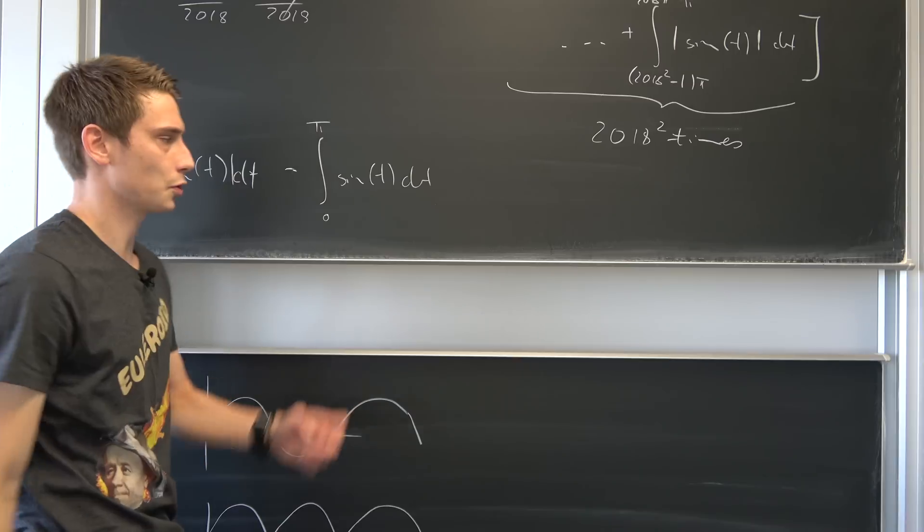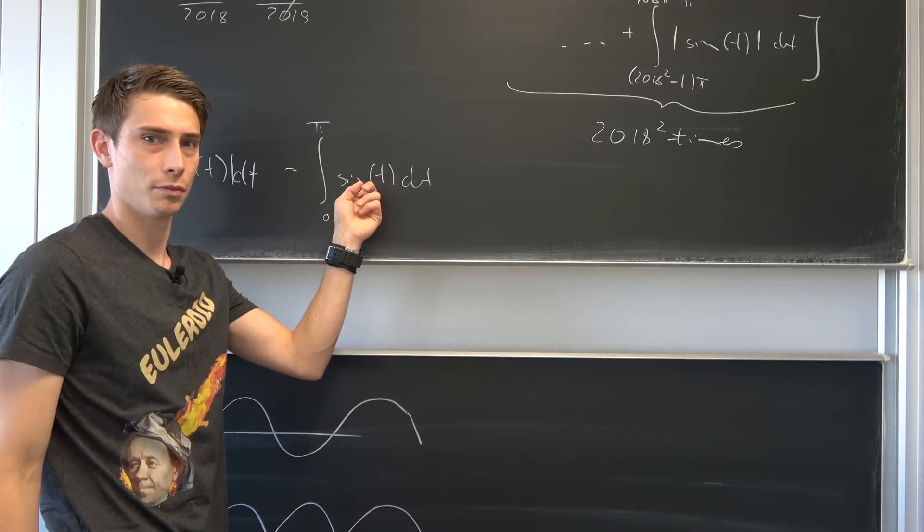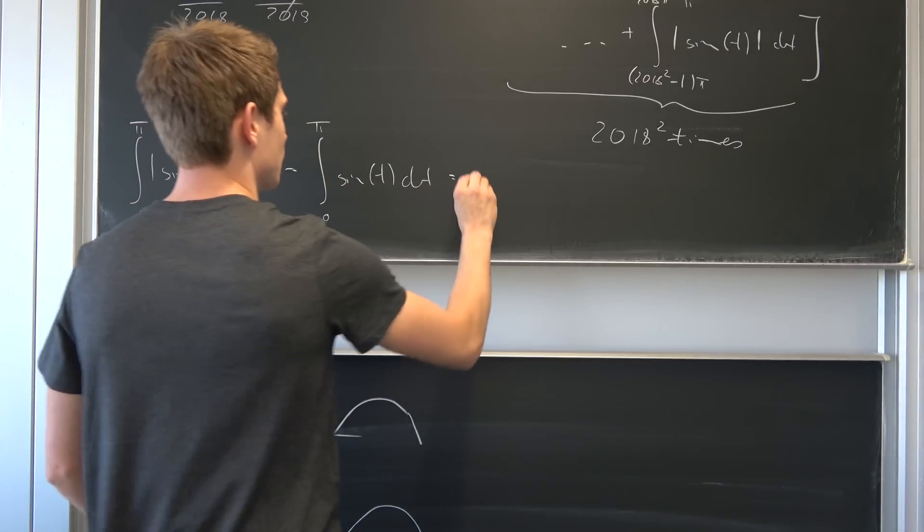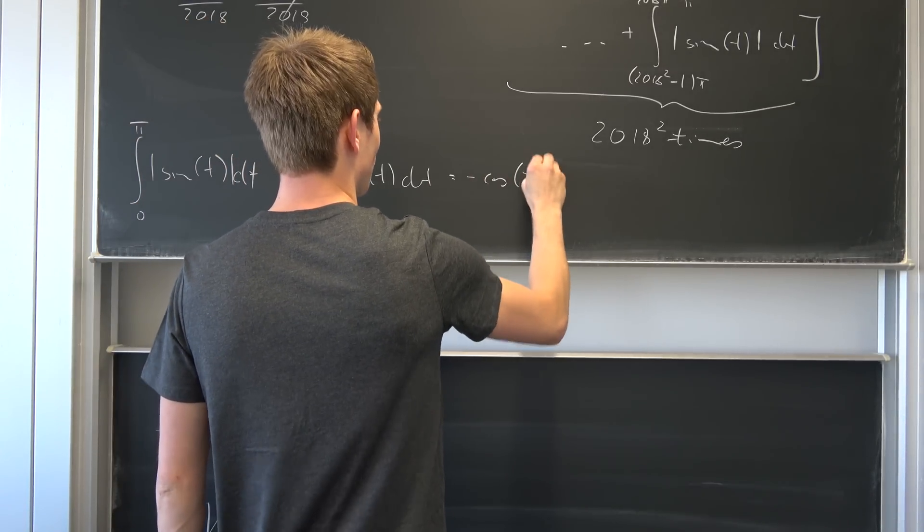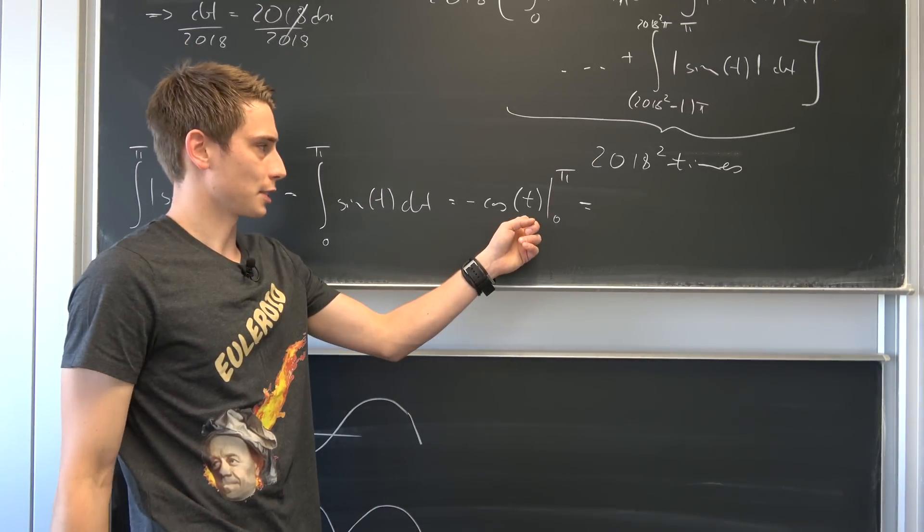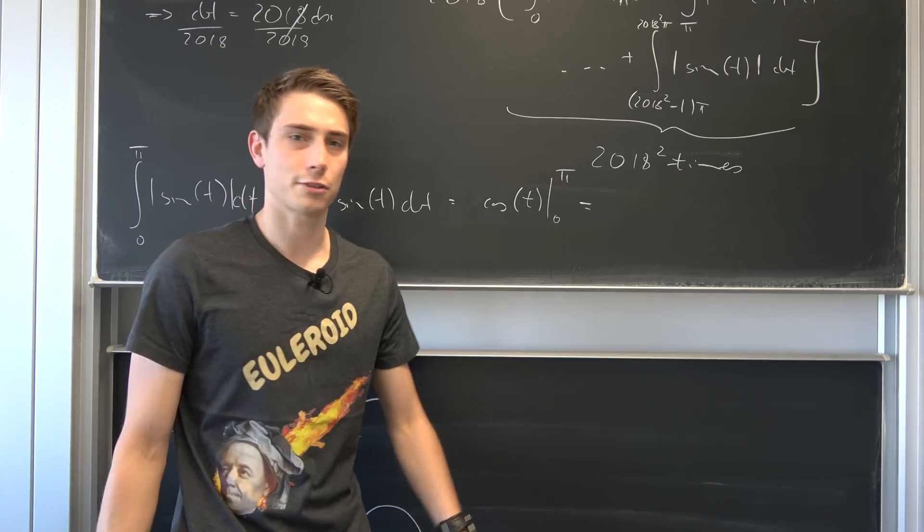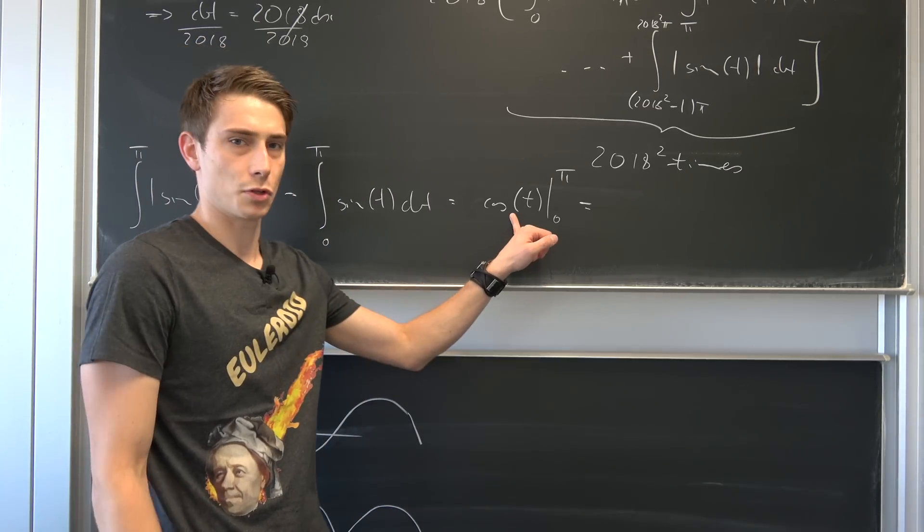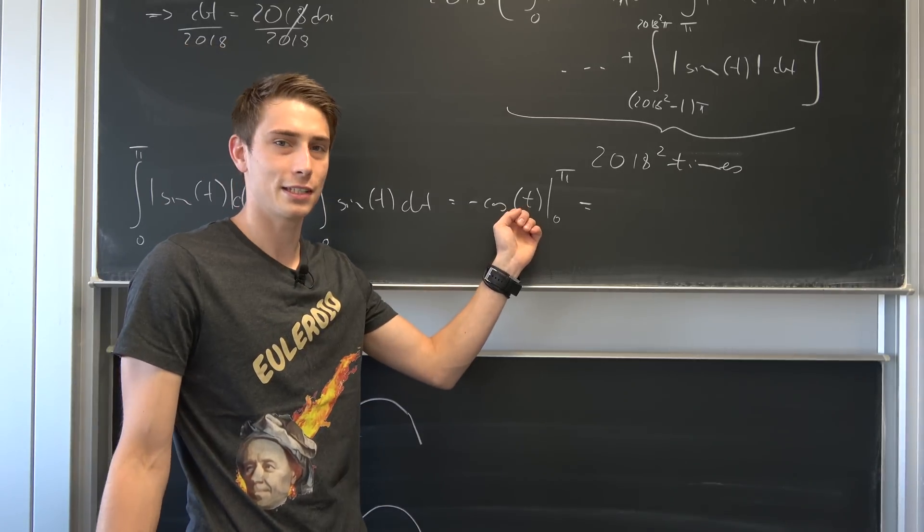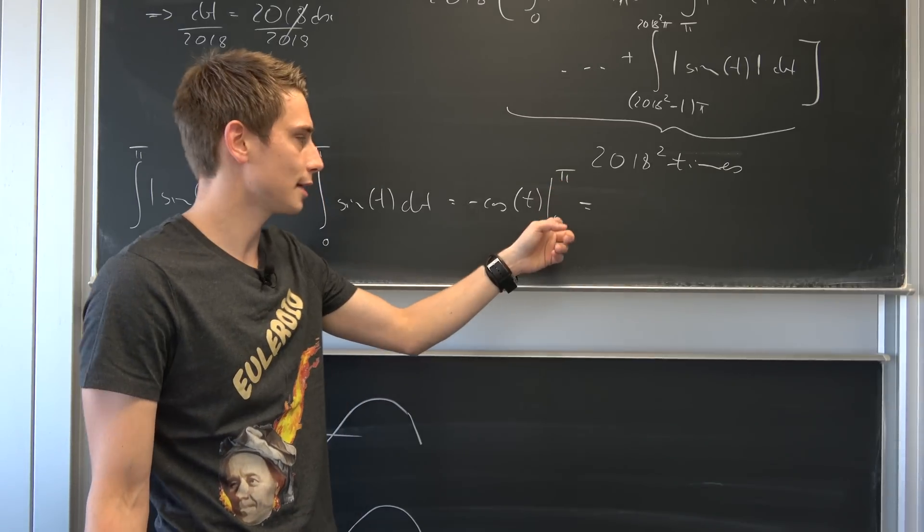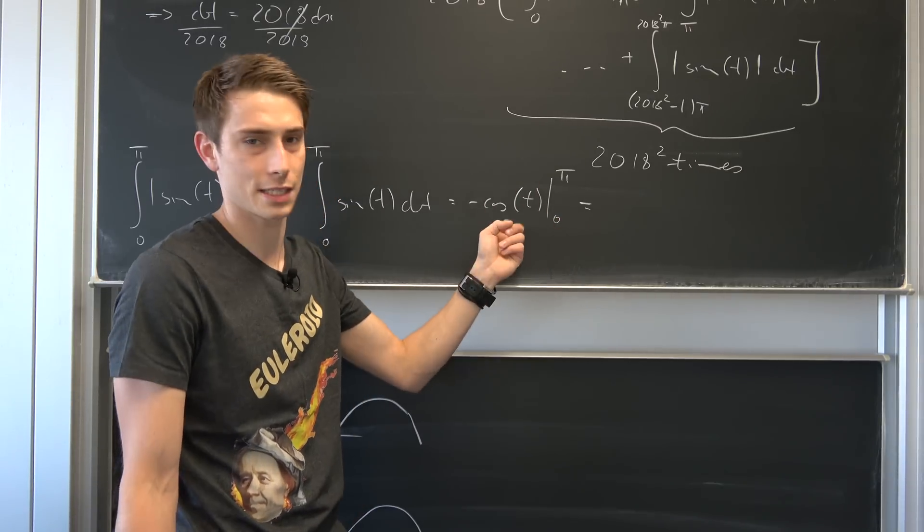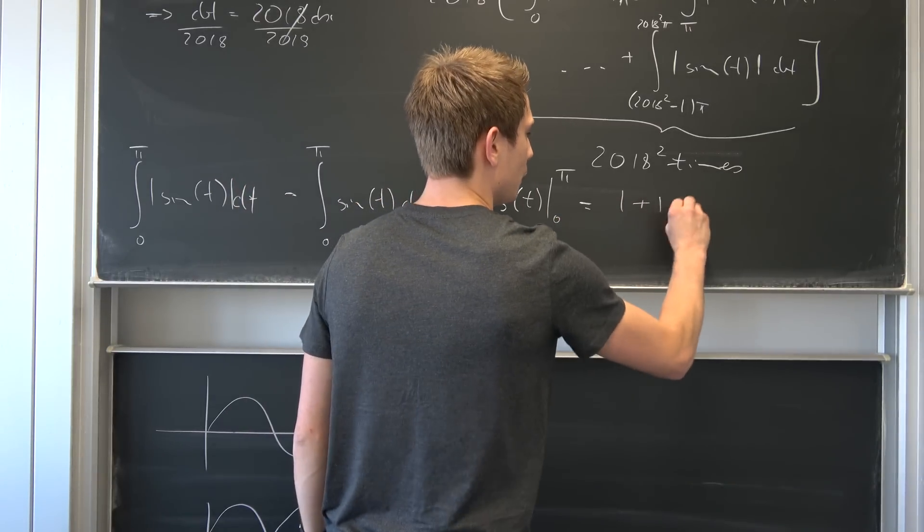And well we know how to integrate that. This is nothing but the negative cosine. It should be the negative cosine. So this is the negative cosine of t from 0 to pi. And well, this is nothing but, so we have the negative cosine of pi. This is going to be 1 and the negative cosine of 0 is just negative 1, but we have the second part of the integration negative 1. So we have 1 plus 1 overall, this is 2.